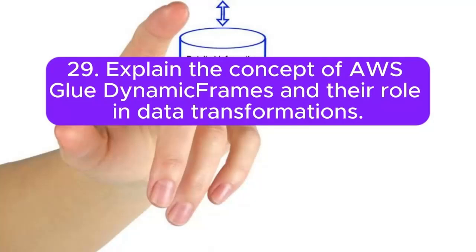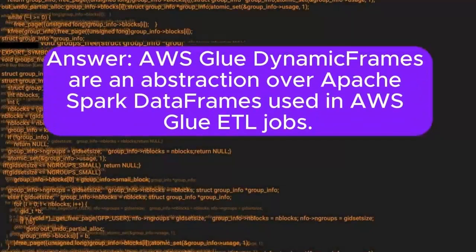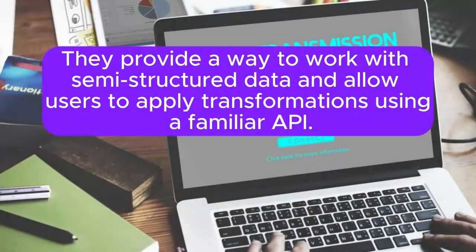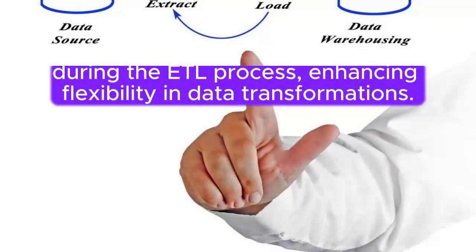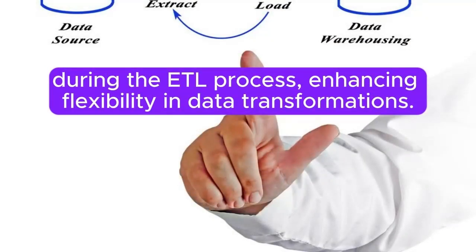29. Explain the concept of AWS Glue Dynamic Frames and their role in data transformations. Answer: AWS Glue Dynamic Frames are an abstraction over Apache Spark data frames used in AWS Glue ETL jobs. They provide a way to work with semi-structured data and allow users to apply transformations using a familiar API. Dynamic Frames make it easier to handle complex data structures and formats during the ETL process, enhancing flexibility in data transformations.